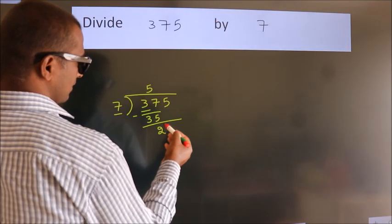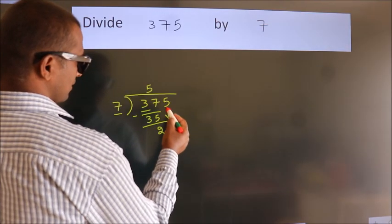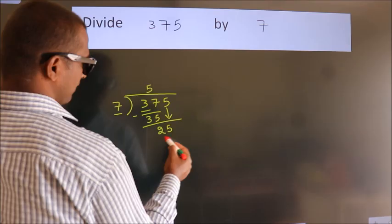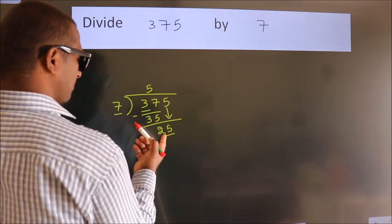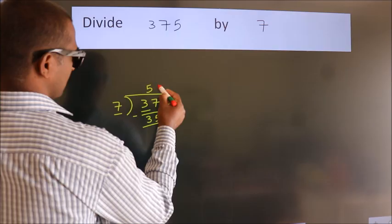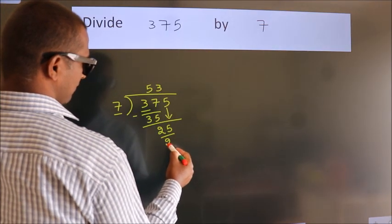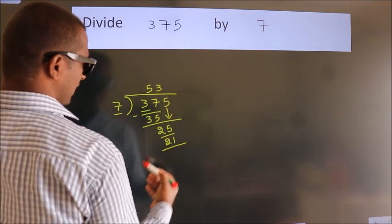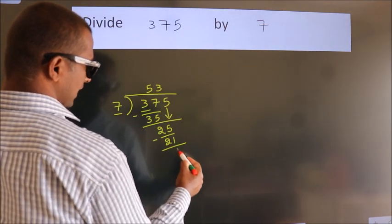After this, bring down the next number, so 5 comes down. So 25. A number close to 25 in the 7 table is 7 threes, 21. Now we subtract. We get 4.